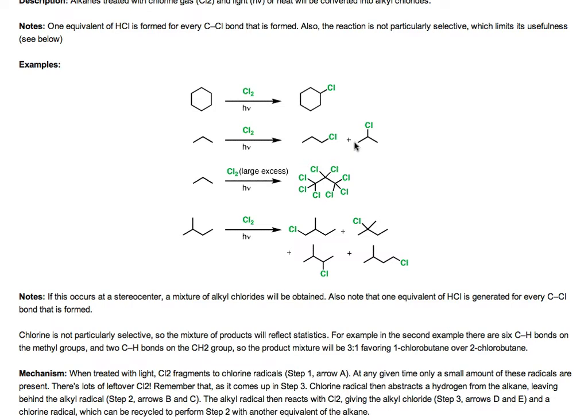That's if we add one equivalent of chlorine. If we add a large excess of chlorine, we're not only going to replace one hydrogen of propane — we'll keep going and replace even more hydrogens until we replace them all. If we added more than eight equivalents of chlorine gas, we'd actually form the octochloropropane, along with eight equivalents of hydrochloric acid.